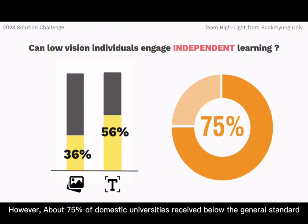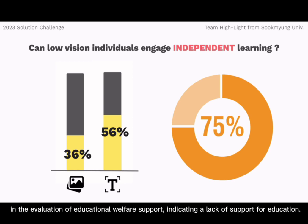However, about 75% of domestic universities received below the general standard in the evaluation of educational welfare support, indicating a lack of support for education.